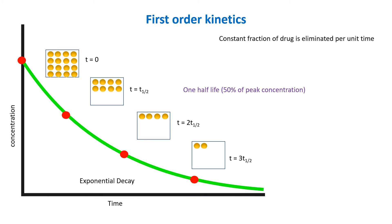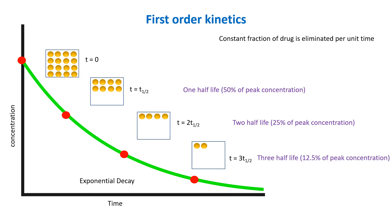As elimination continues, the remaining concentration is reduced by another 50%, resulting in 25% of the original concentration. It is then again reduced by another 50%, resulting in only 12.5% of the original concentration, and it keeps going until it is fully eliminated. Please spend some time carefully studying this graph.